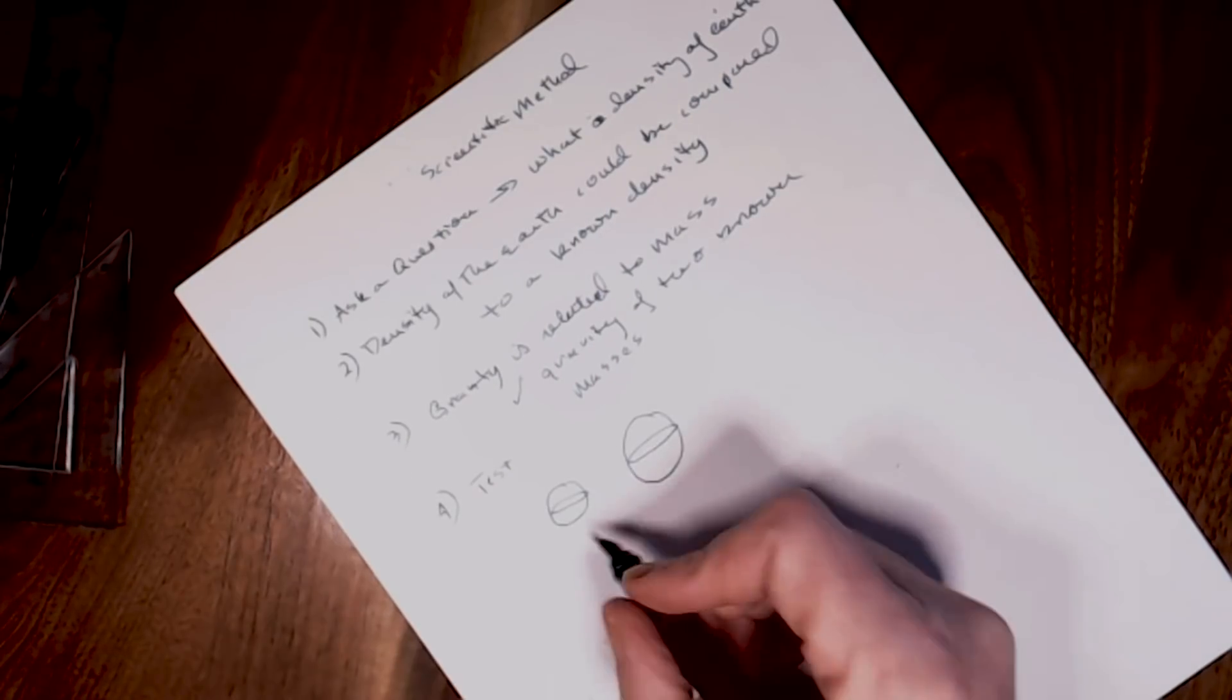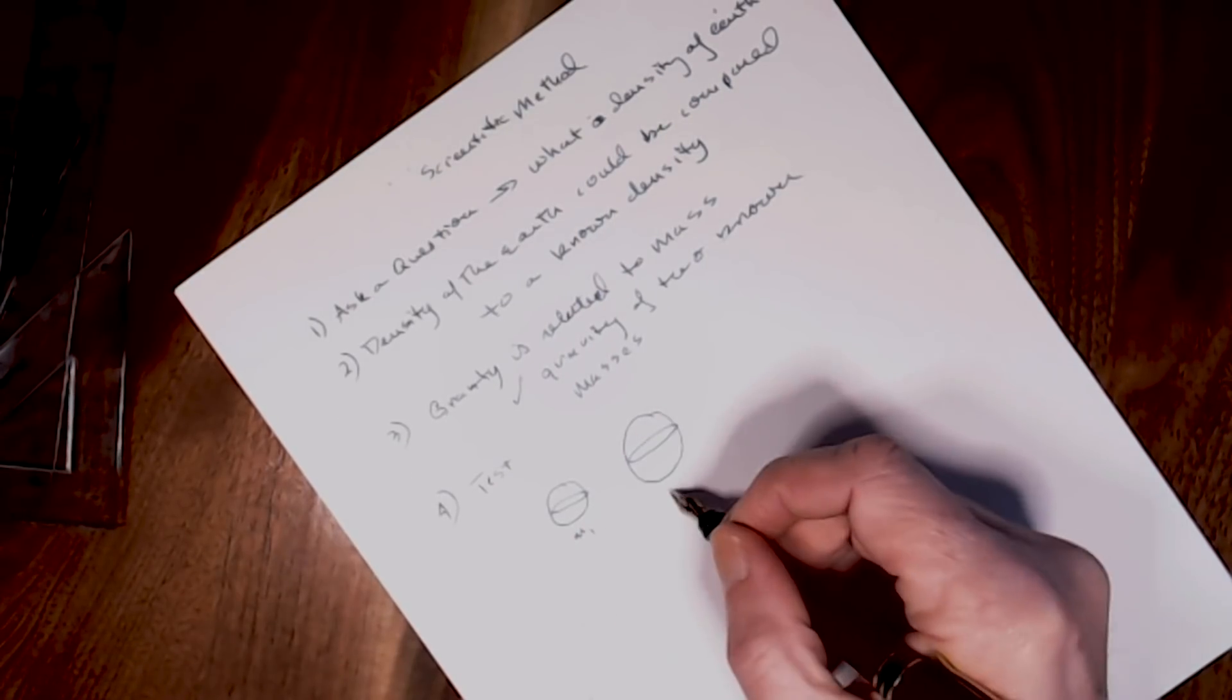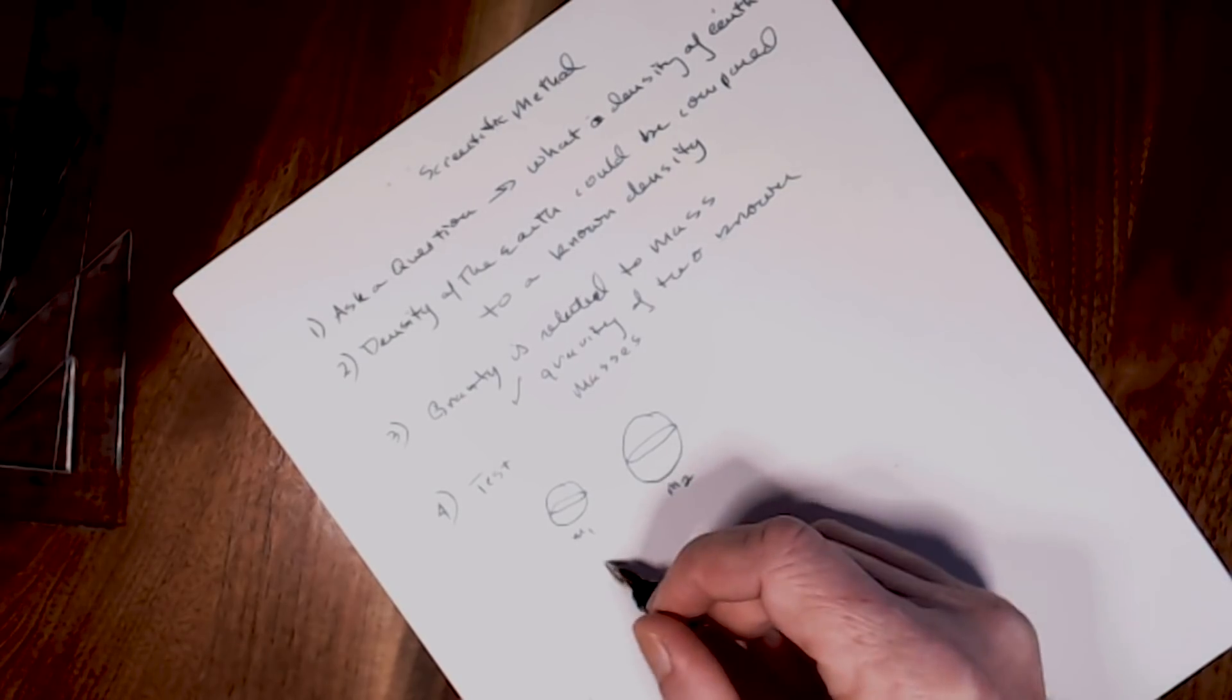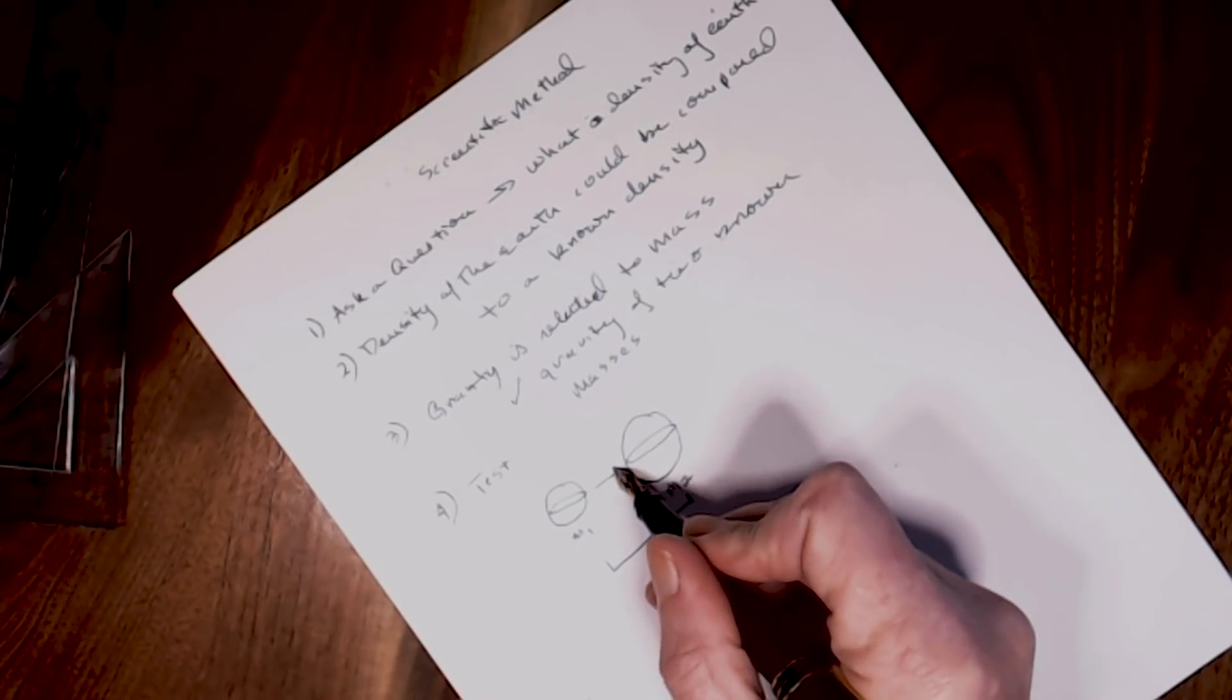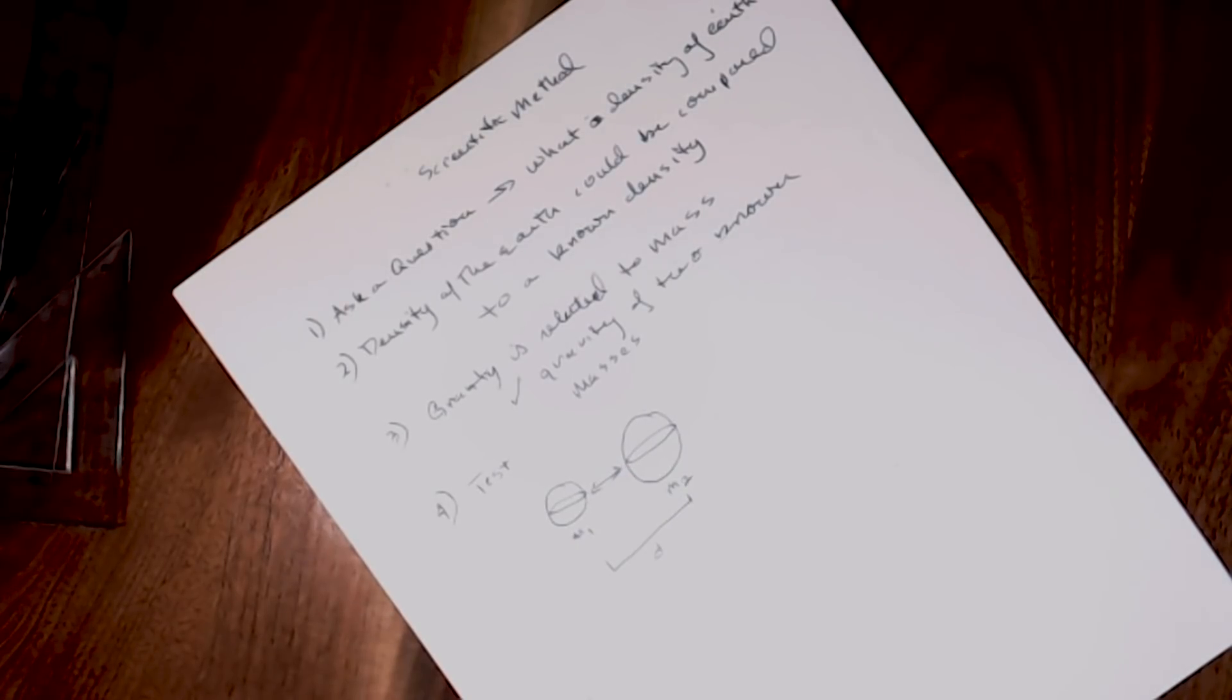So what he decided to do was he tried to come up with two masses of a known distance apart, and he wanted to measure the force of attraction between the two of them. So how did he propose to do this?